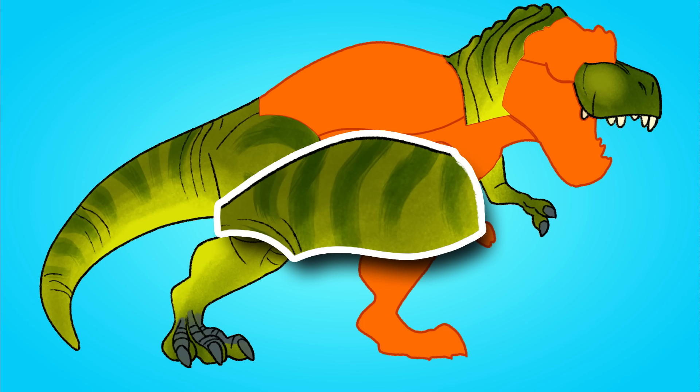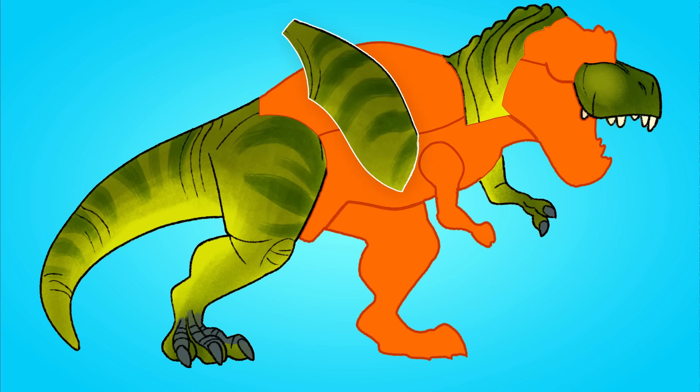Hmm, what could this be? Oh, I know. It's his back. This dinosaur's got stripes on his back.